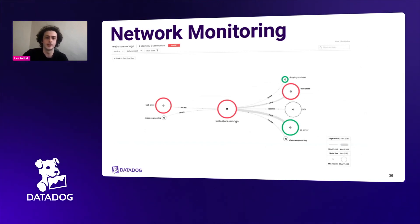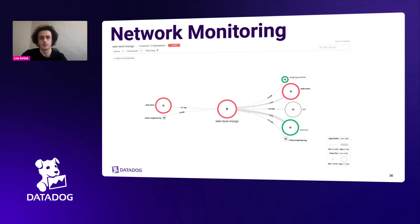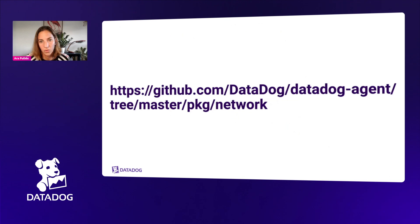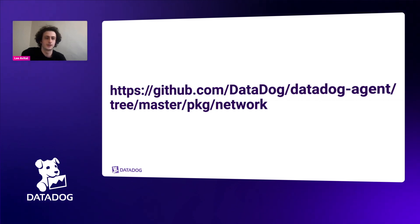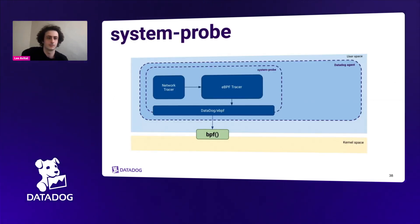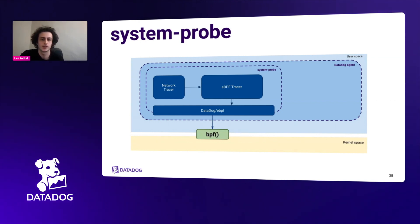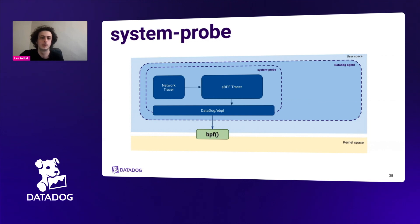In addition to the tabular view, we provide a graph view which lets you understand network topology at a faster glance — the same data in an easier-to-understand format. The agent that gathers all of this is also open source, inside the Datadog agent package. All of this happens within the system probe — a subprocess of the Datadog agent that runs at a slightly elevated privilege, allowing it to load BPF features.